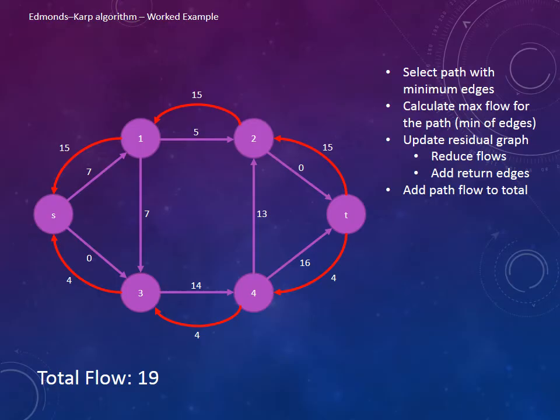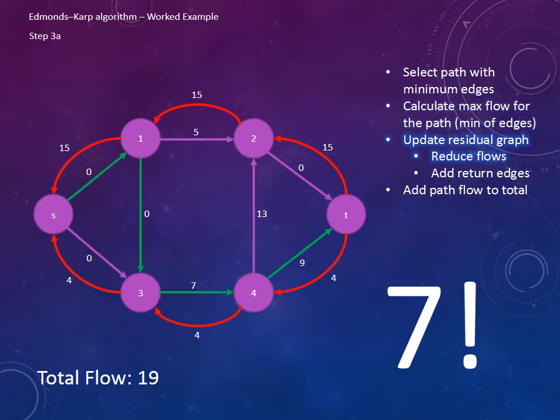Now we go back to the beginning and select the next path with the minimum number of edges. This is the path we have chosen. We now calculate the maximum flow of this path which is 7. Now we need to update the residual graph by reducing the flows and then add the return edges. Now as we have another 7 flowing from source to sink, we can add 7 to the total flow.